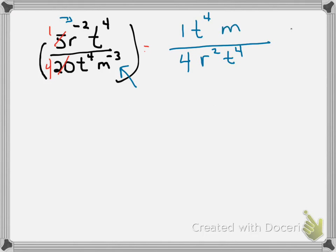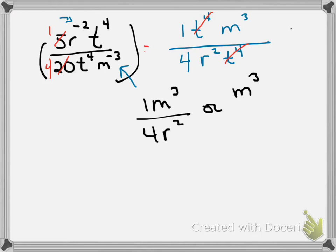The M here is negative so we're going to move it to the top and change it to a positive. Now if you notice, we have T to the fourth on top and T to the fourth on the bottom — those divide to make one. So my answer here would be M to the third power over 4R squared. You can put a 1 there or just leave it as M to the third over 4R squared.